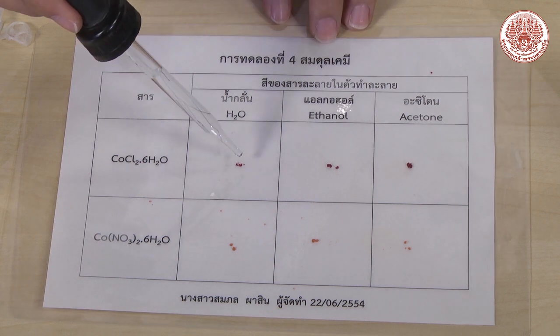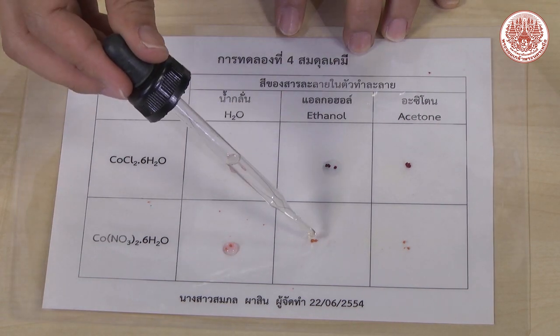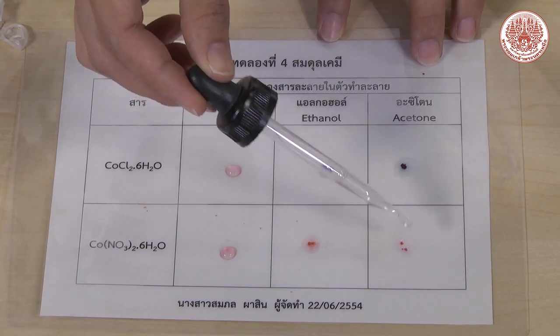In the first column, add water one drop each. The second column, add ethanol, and acetone is on the third column. Record the color of the solution.